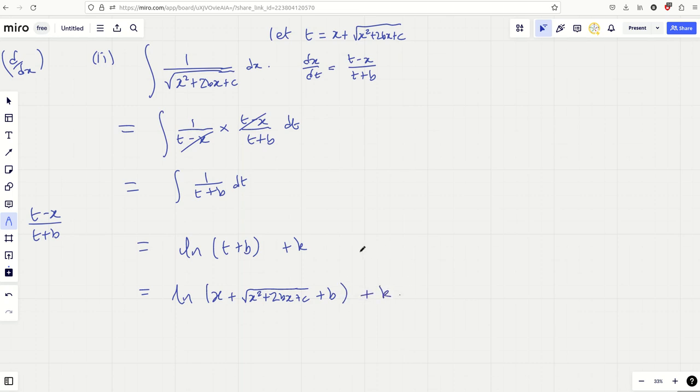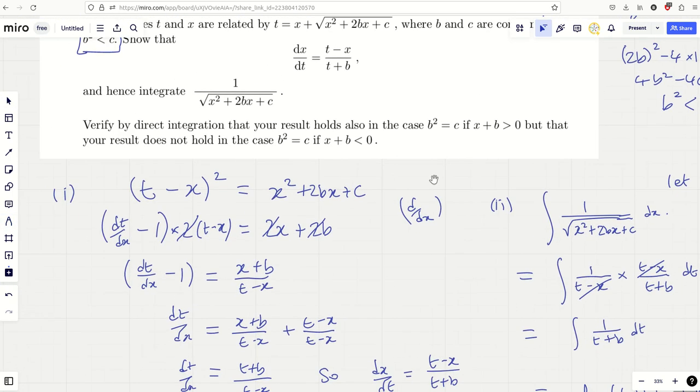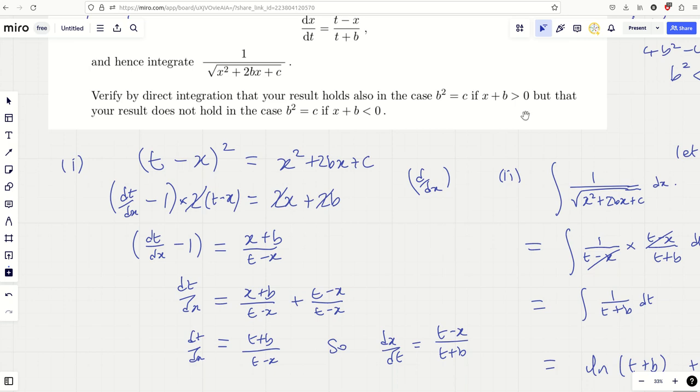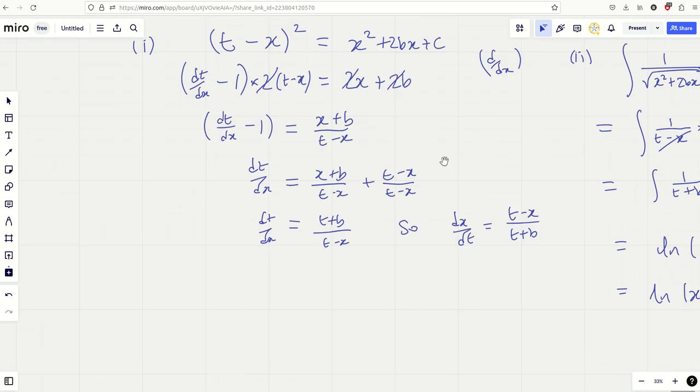Don't forget to switch it back out for x's because we were asked to integrate a function of x. What's t again? I think t was something to do with x plus that square root thing. So it's ln of x plus root x squared plus 2bx plus c plus b plus a constant k. Now, verify by direct integration that your result holds also in the case where b squared equals c. Yeah? Interesting. Very interesting.